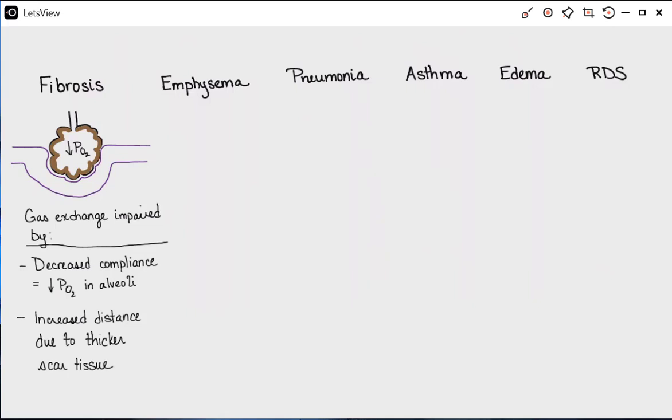Emphysema is a double whammy. We have loss of elastin, but we also have a decreased surface area because the alveoli get partially destroyed.